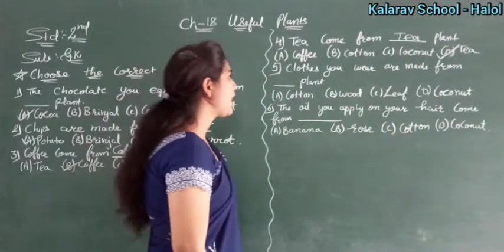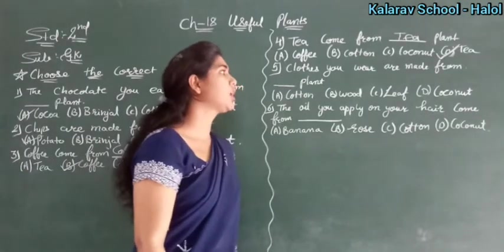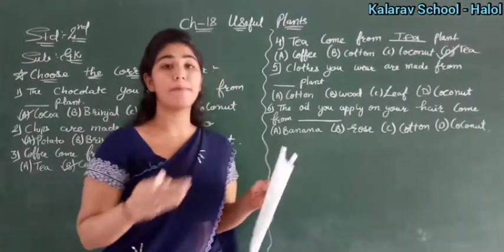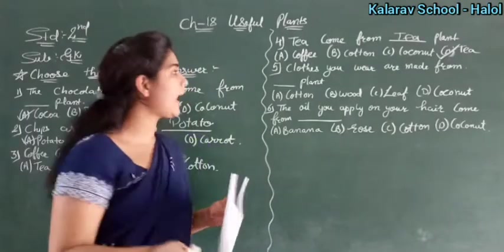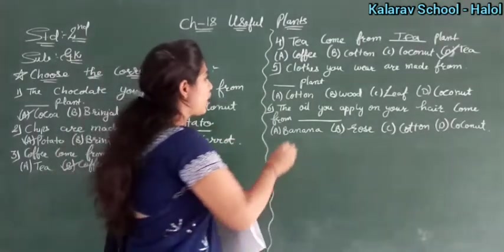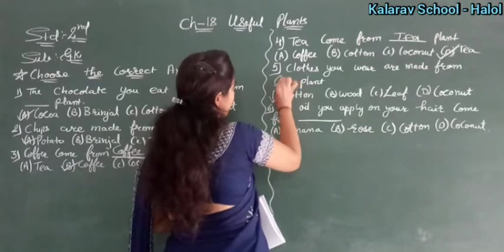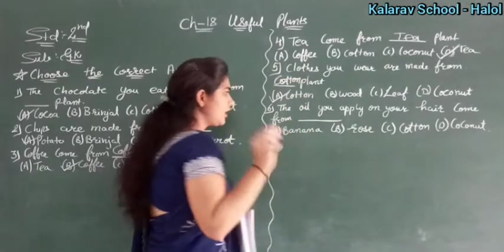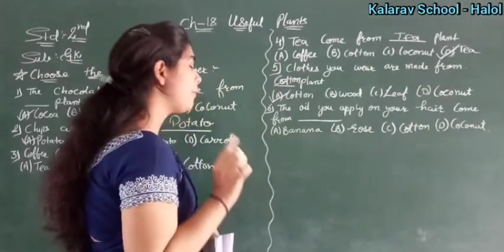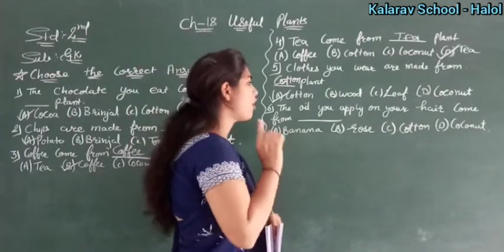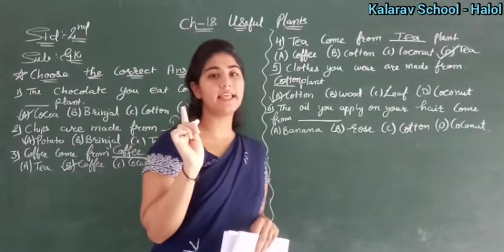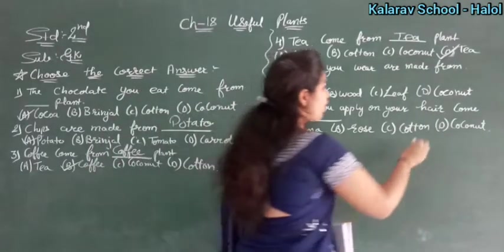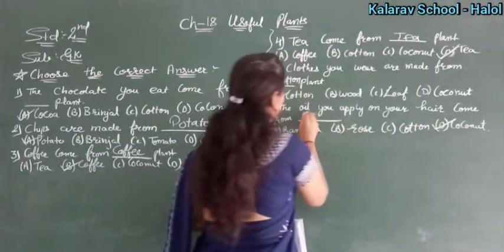Clothes you wear come from which plant? They are made from fabric, and that fabric comes from cotton. Cotton is given to us by the cotton plant. Oil you apply on your hair — where does that oil come from? It comes from the coconut plant. So here you write coconut plant.